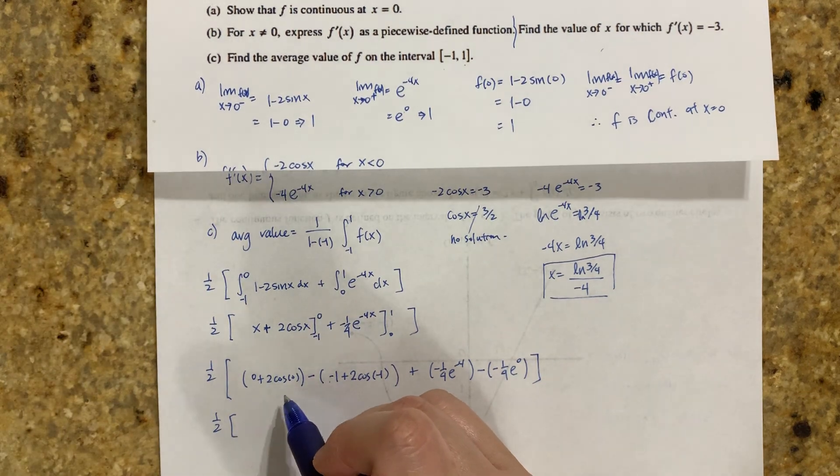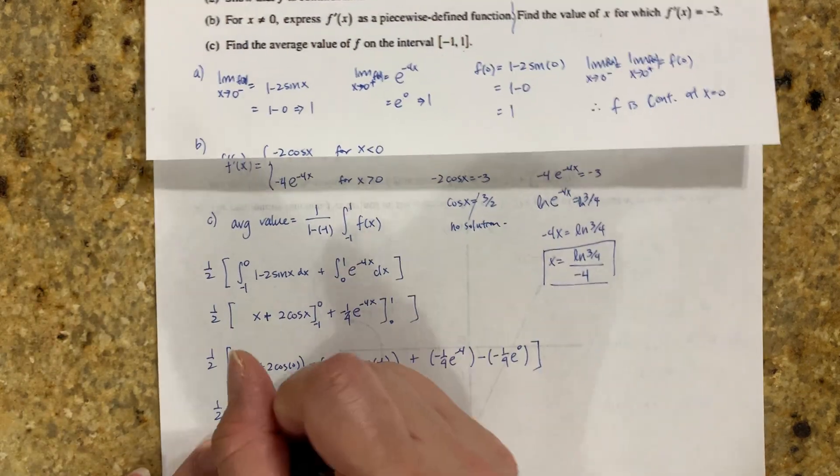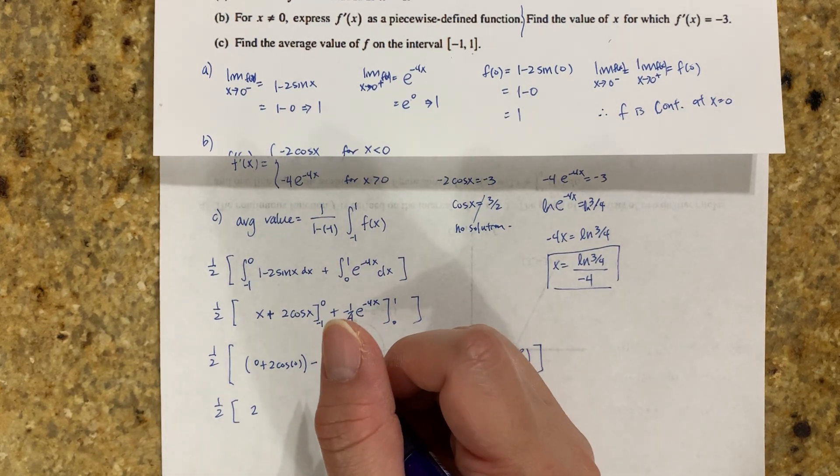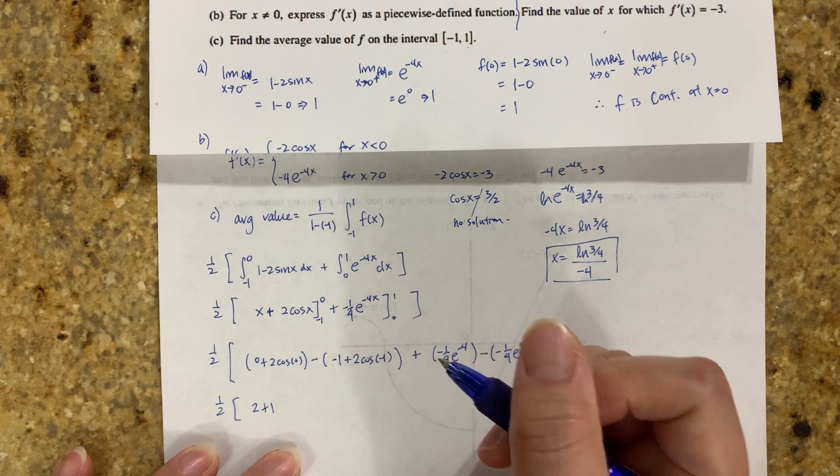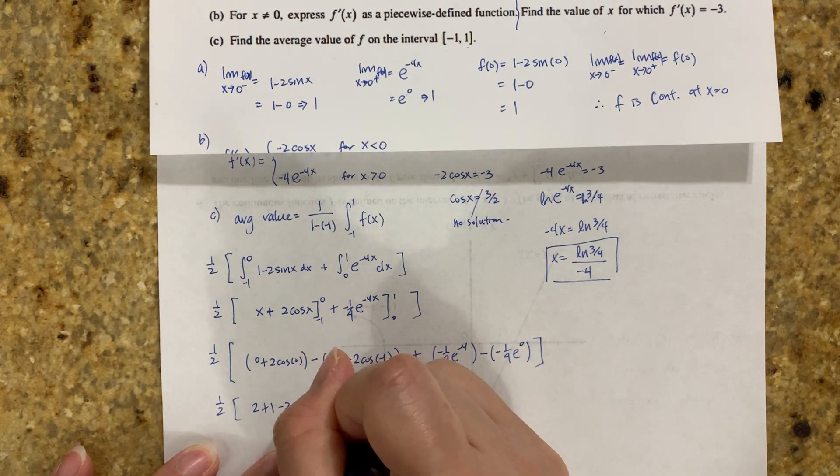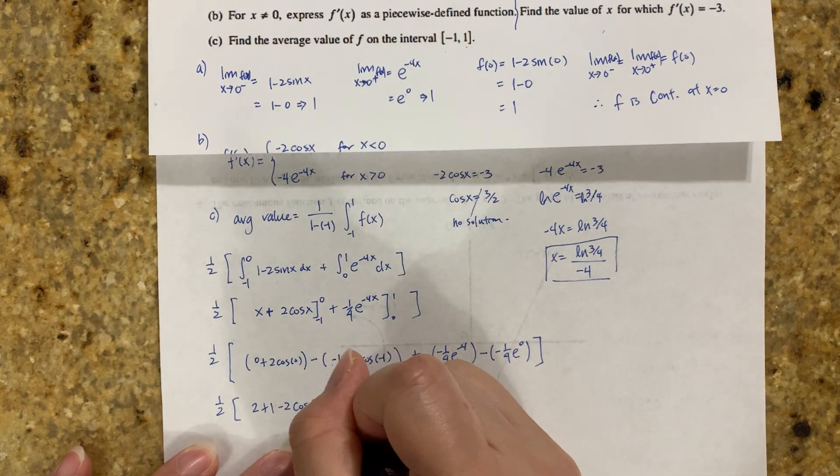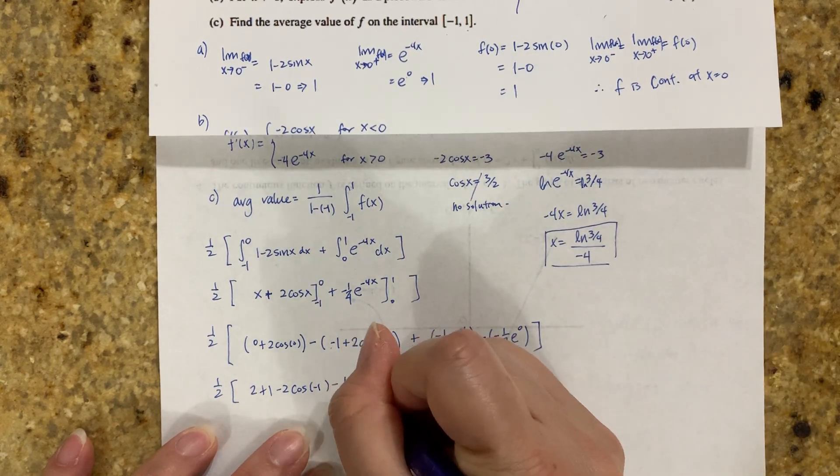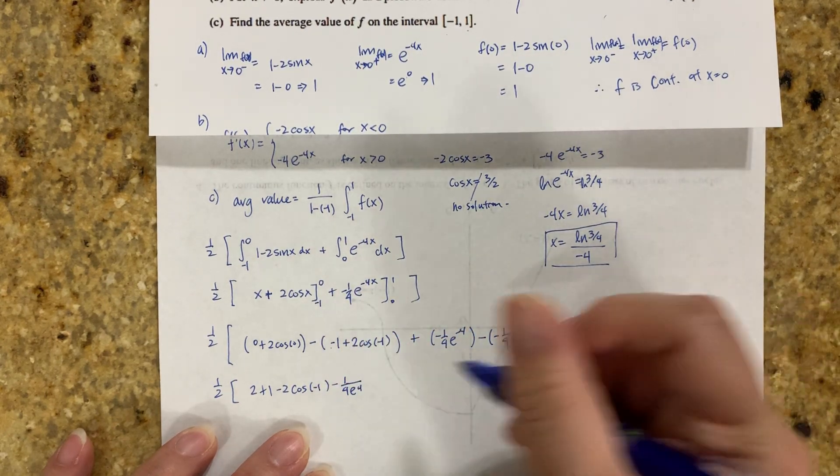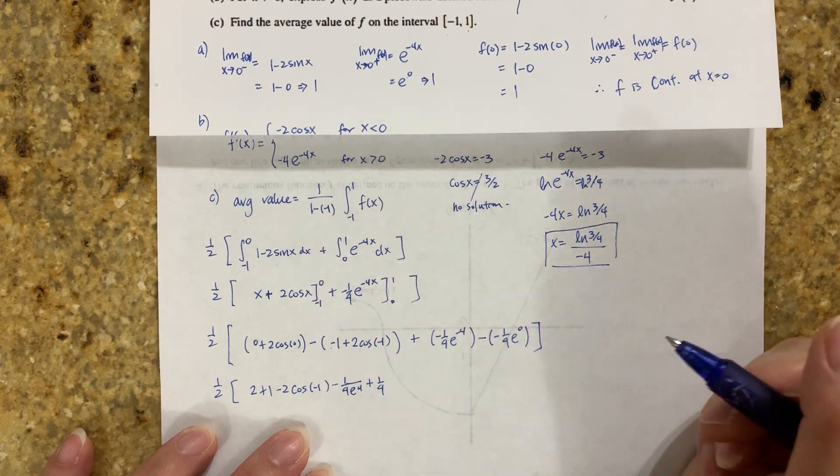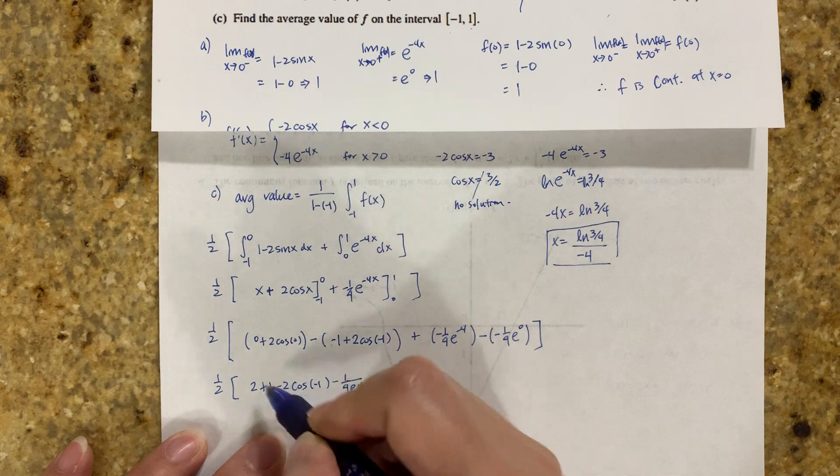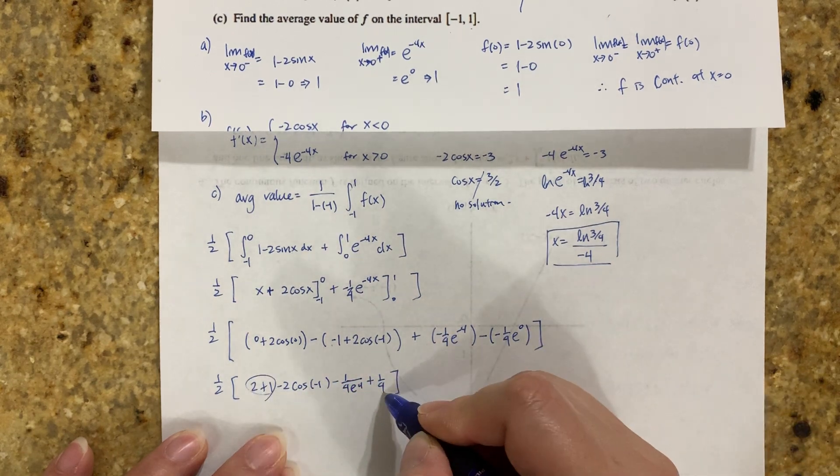2cos(0) = 2, plus 1, minus 2cos(-1), minus 1/4 times e^(-4), plus 1/4 since e^0 = 1. Adding these up: 2 + 1 + 1/4 = 3 and 1/4 = 13/4.